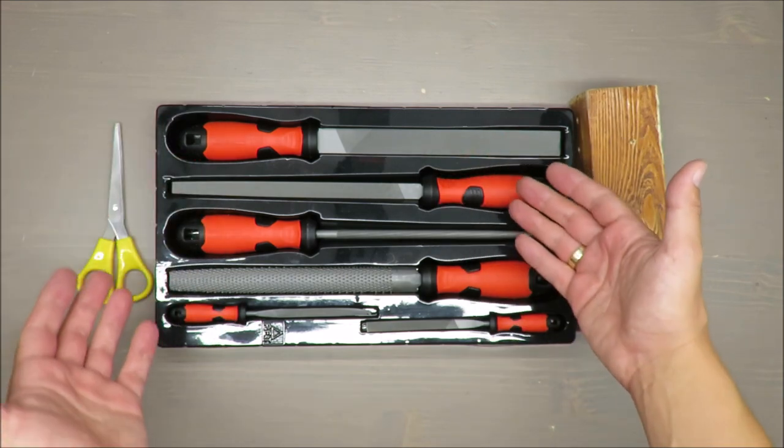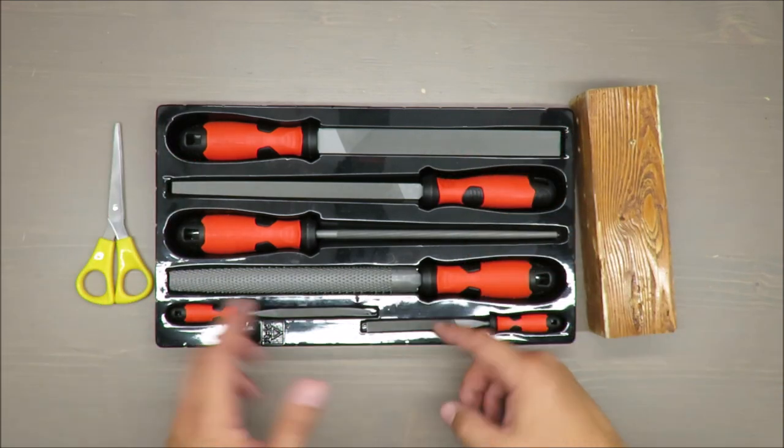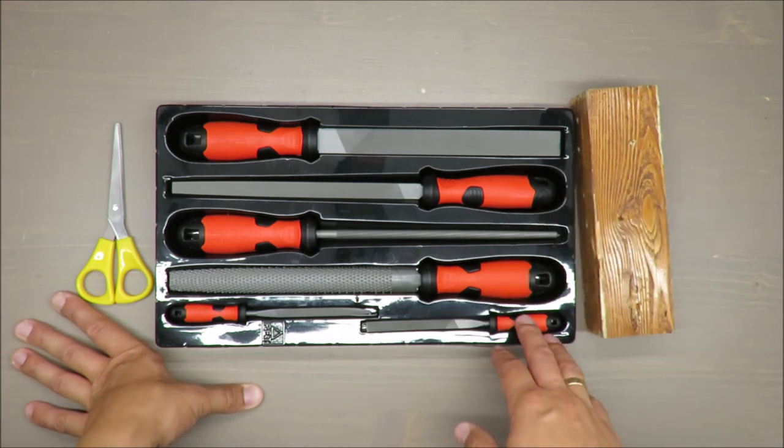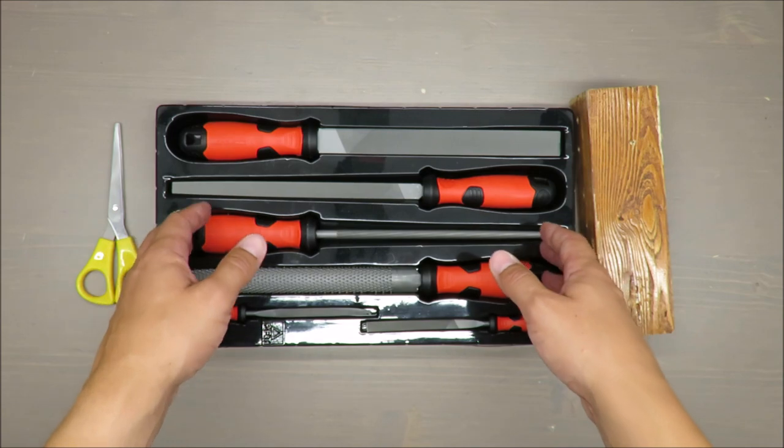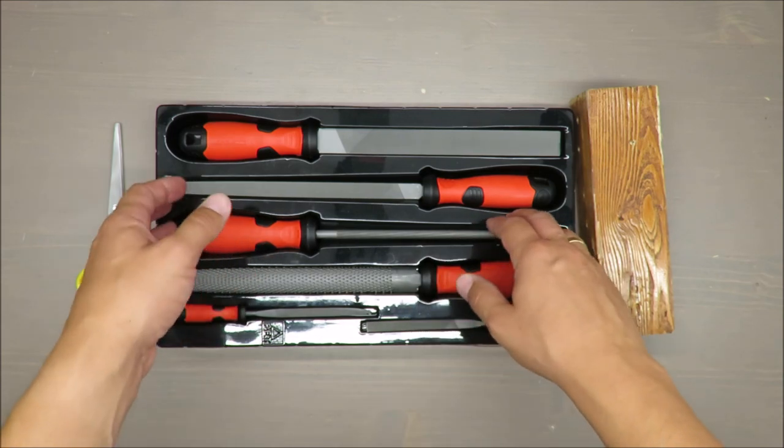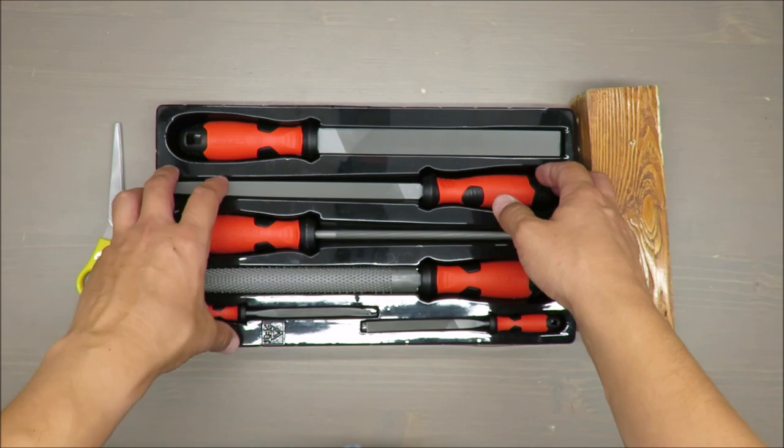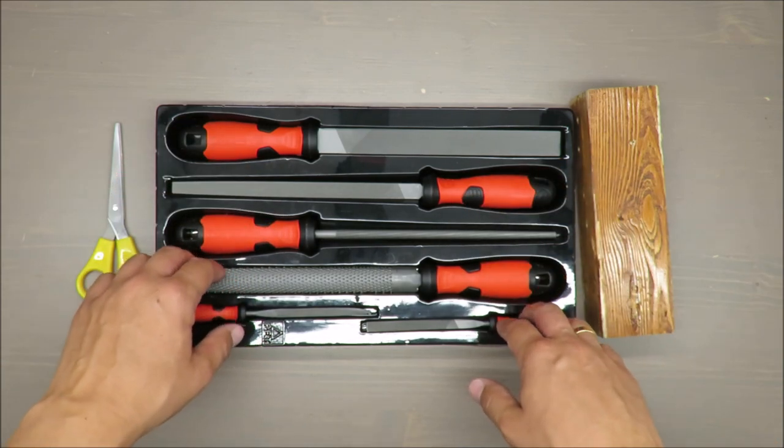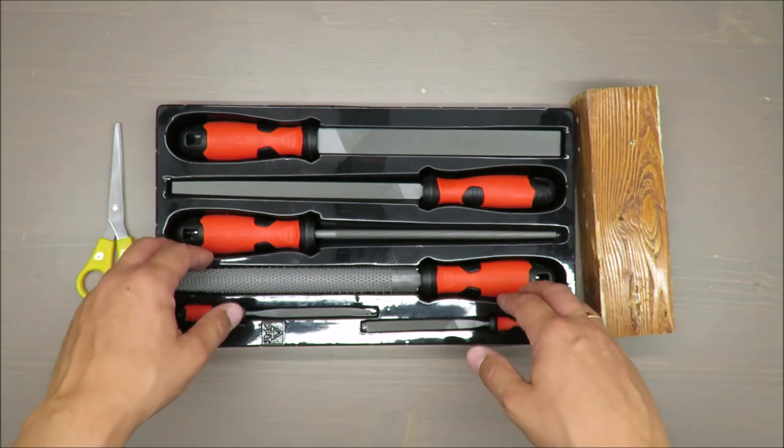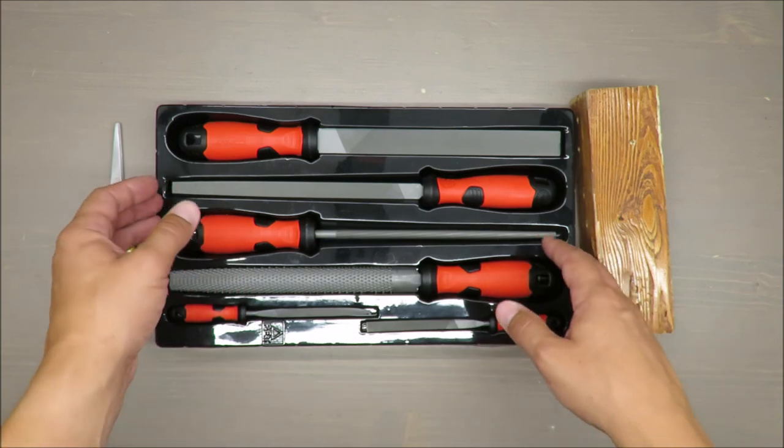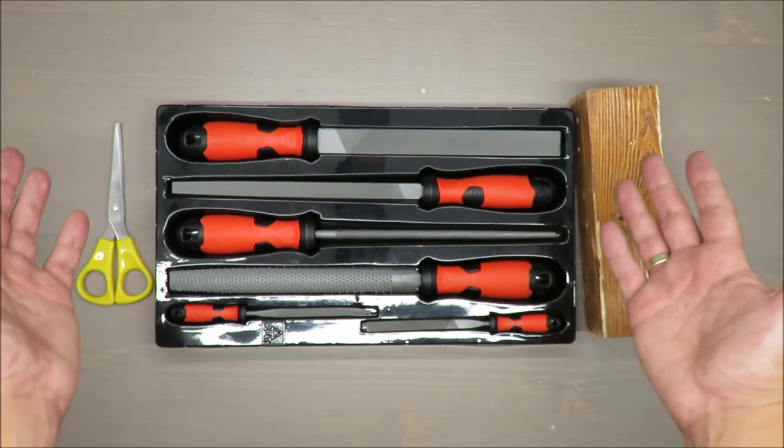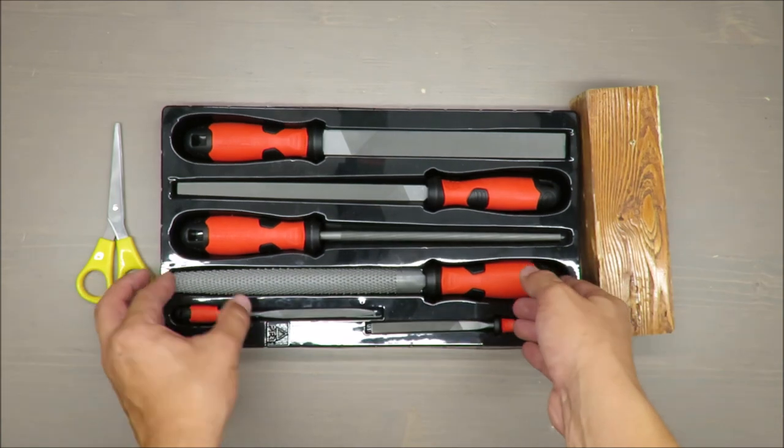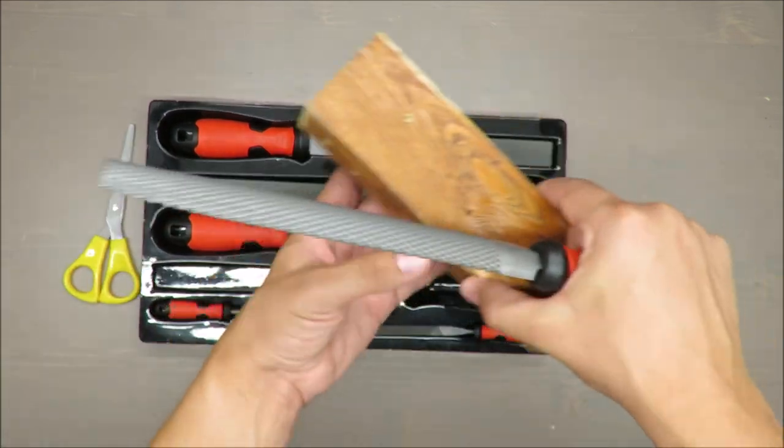As part of the set, as you can see, you have six elements: one rasp blade length of 200 millimeters with second grade coarseness, two needle file blades, and three file blades, length of 200 millimeters as well. Let's start with the one designed for wood, quite aggressive.